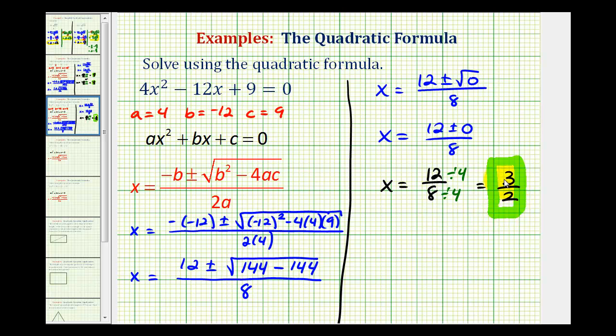And this tells us several things. Because it's real and rational, the original equation was factorable. And in fact, it's a perfect square trinomial.